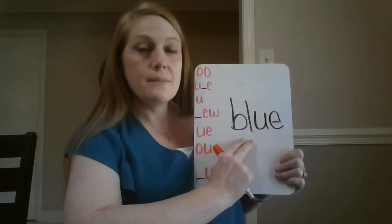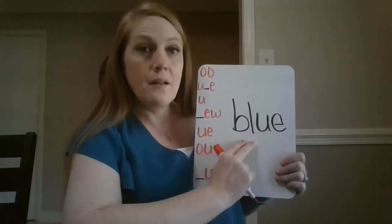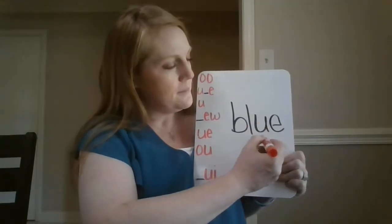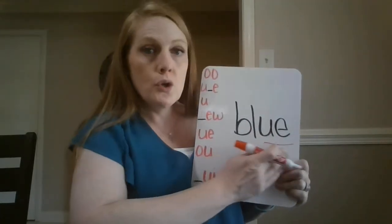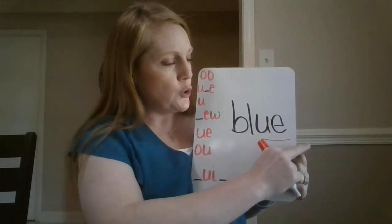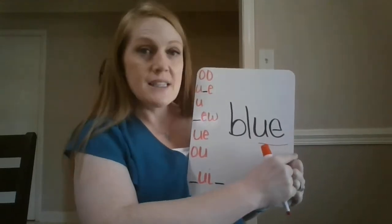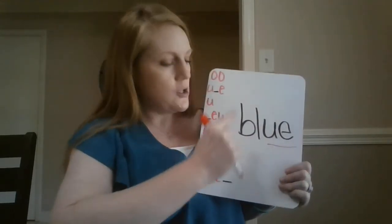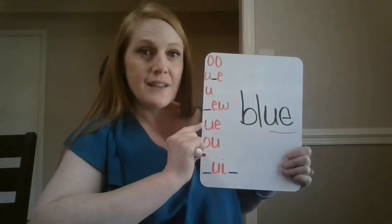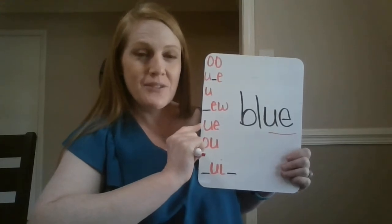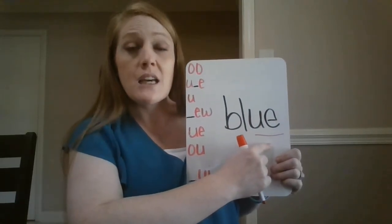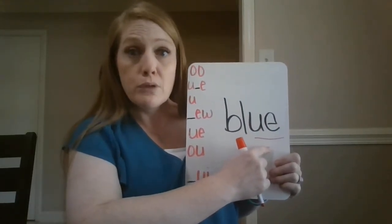Consonant blend with B-L. So I have BL, OO — blue. This word is blue, and that uses our U-E spelling right here. Blue — this is blue as in the color blue.